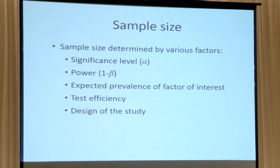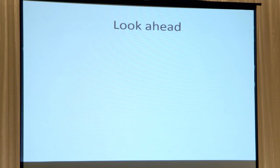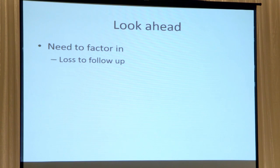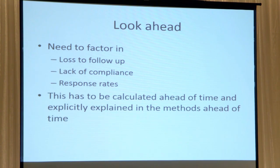The design of the study is also very important — you need to take into account your primary and secondary outcomes when calculating sample size. You also need to look ahead and learn from previous studies. Look at the literature for factors involved in attrition rate, such as people lost to follow-up. Based on experience from previous trials, factor in lack of compliance, response to surveys, and different people in different locations, and calculate ahead of time to obtain the adequate number of samples.